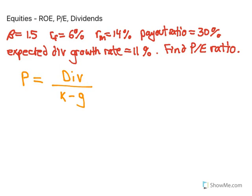The exact same thing happens here, except think about what we want — we want the price-to-earnings ratio. So we're literally going to divide that price by the earnings, or earnings per share. If we divide the left side by earnings, we also have to divide the right side by earnings. So we think about the dividend per earnings — as a portion of the earnings, how much is being paid out as a dividend — that's our payout ratio.